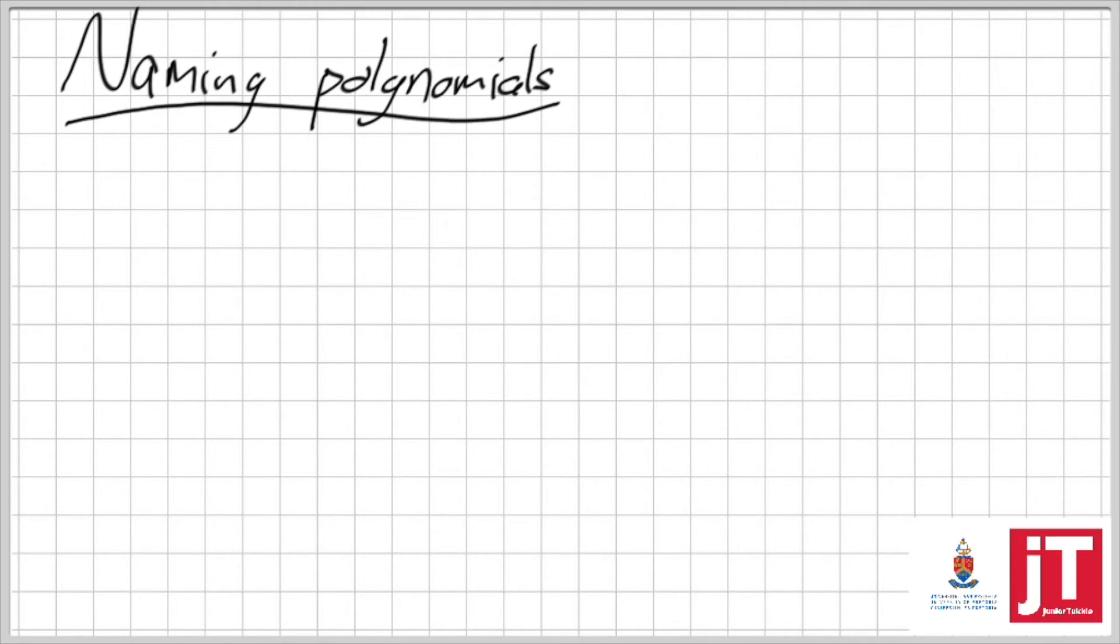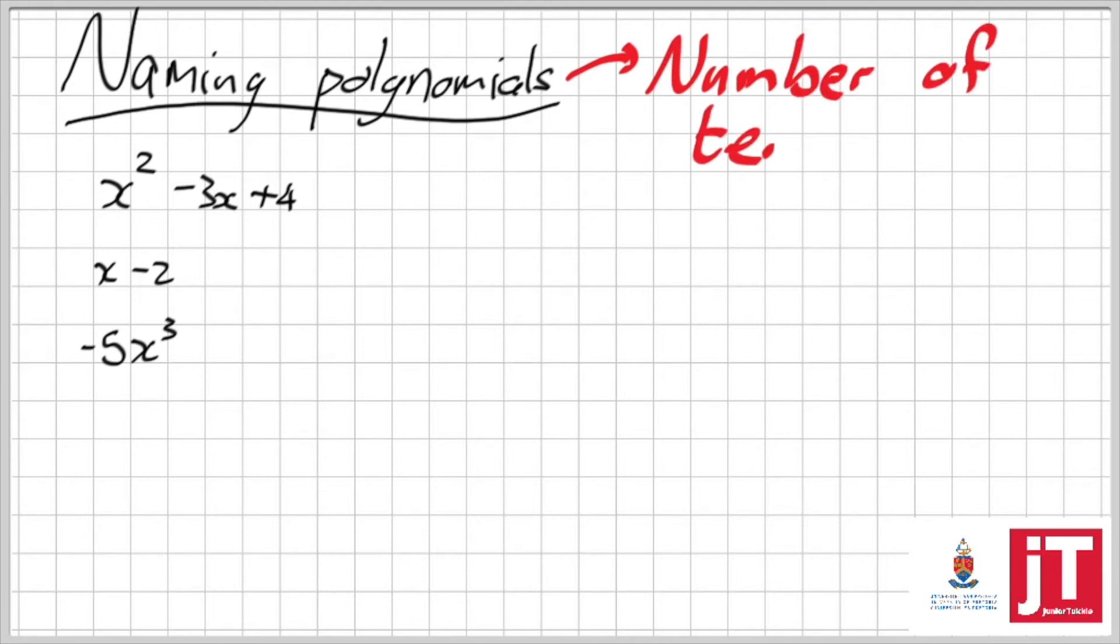Well, they would first of all ask us to name a polynomial. Well, if I look at x squared minus 3x plus 4, instinctively, how many terms do you see? Well, how many terms do you see in the first one?